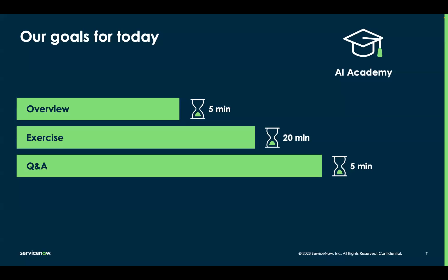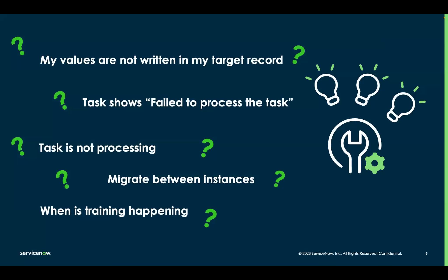Today's session covers technical tips and troubleshooting for Document Intelligence. Common questions we'll address include: my values are not written to my target record; my task shows 'fail to process' — how do I troubleshoot that; a task is simply not processing — what's happening; and how can I migrate my models between instances, for example from a subproduction instance to production. We'll also cover when exactly training happens when using Document Intelligence.